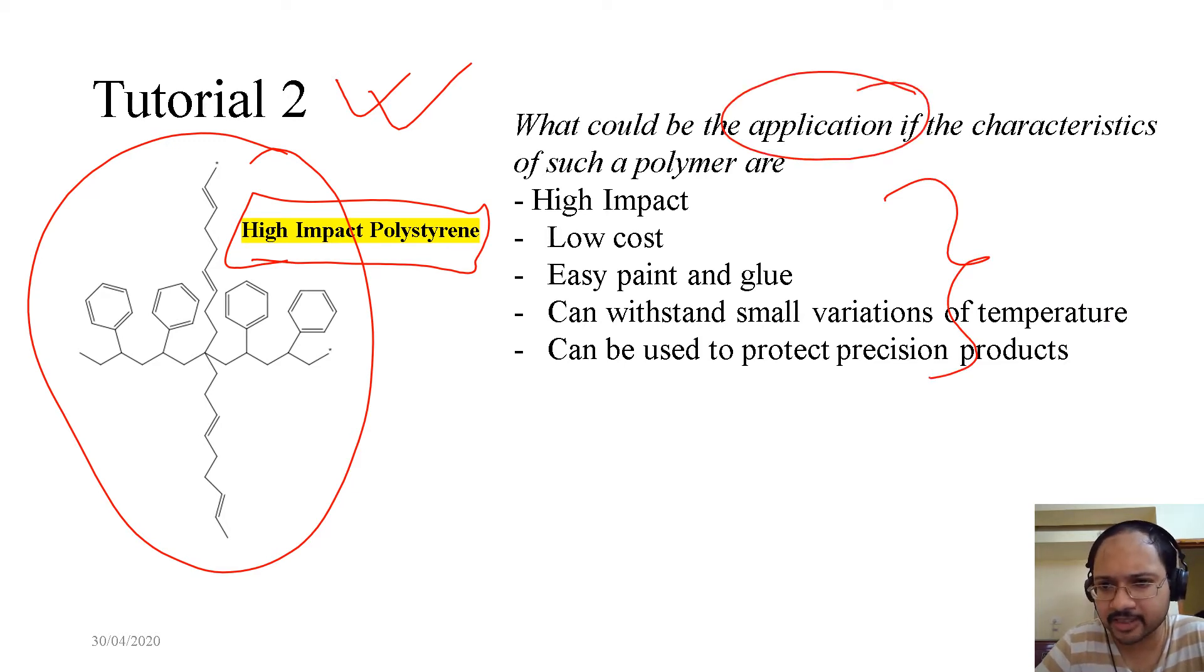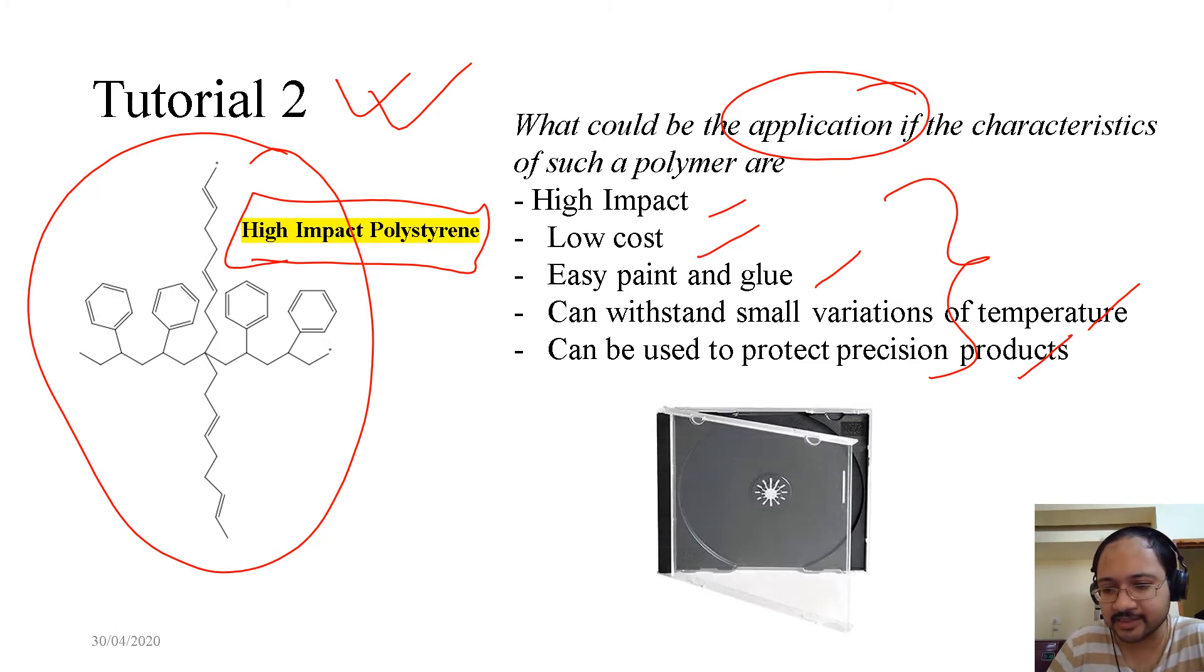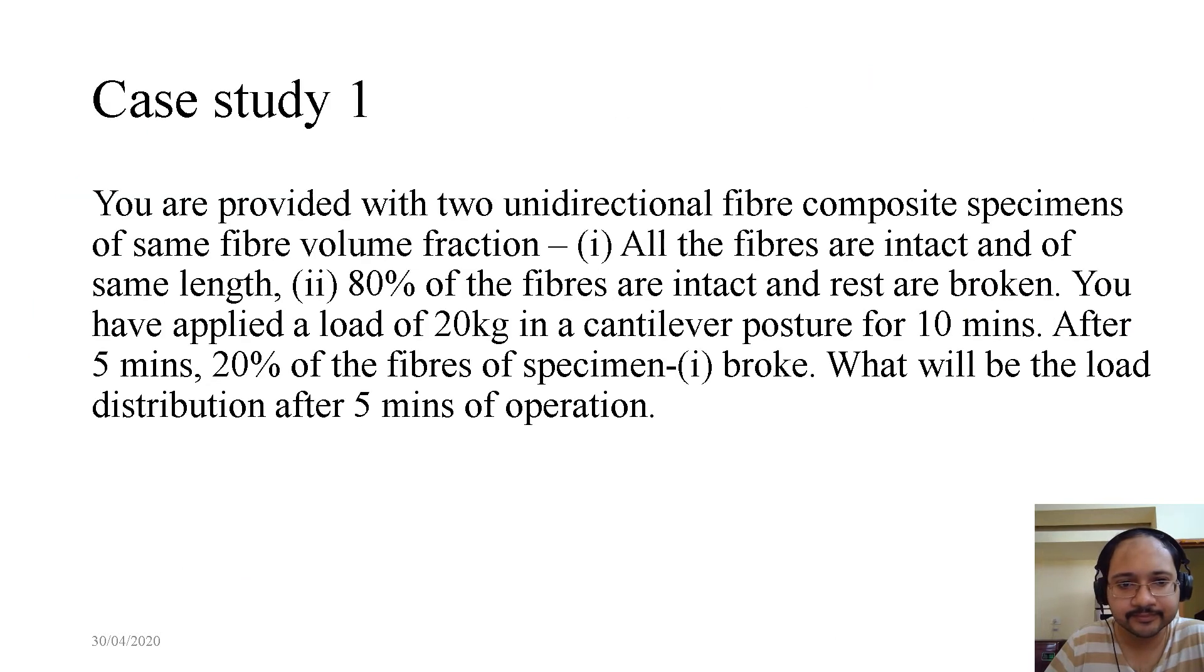What could be the application if the characteristics of such a polymer are high-impact, low-cost, easy paint and glue? It's easy to paint and glue. Can withstand small variations of temperature. Can be used to protect precision products. That means, it is used for some kind of cover, some kind of protection, some kind of materials which are required for casing. A common example is a CD case.